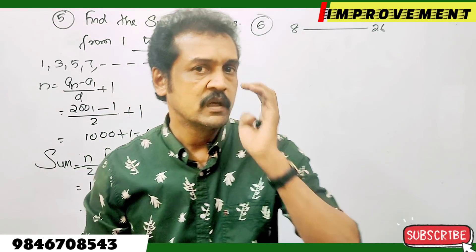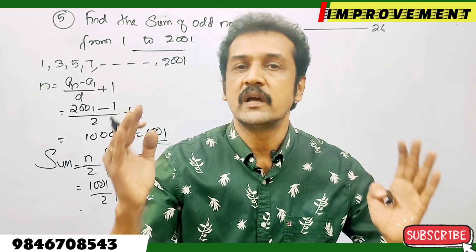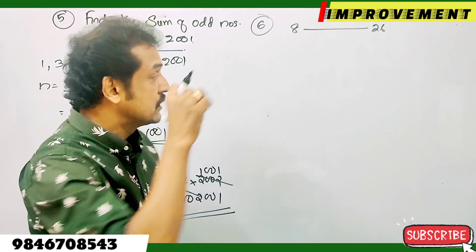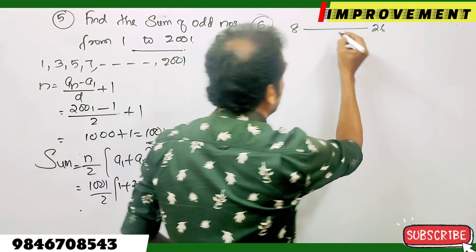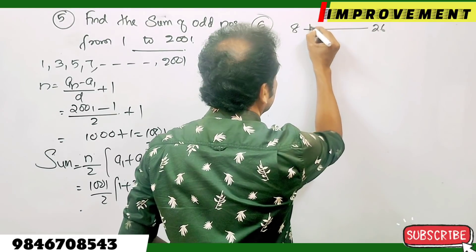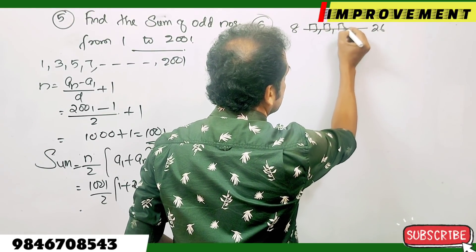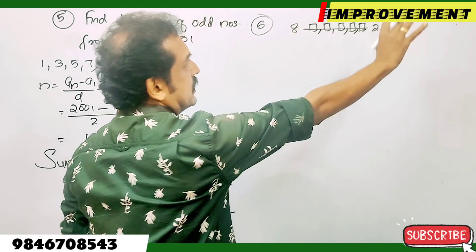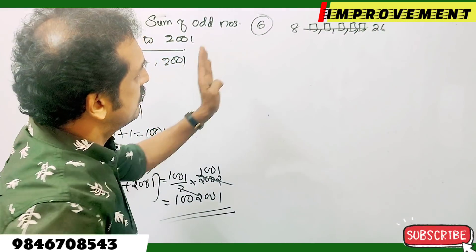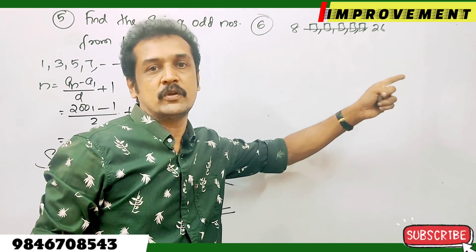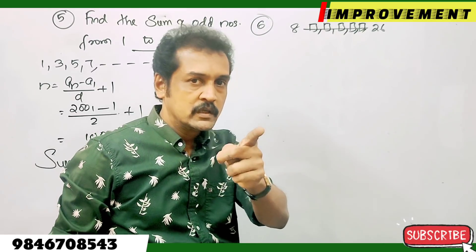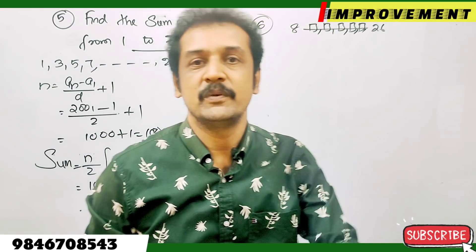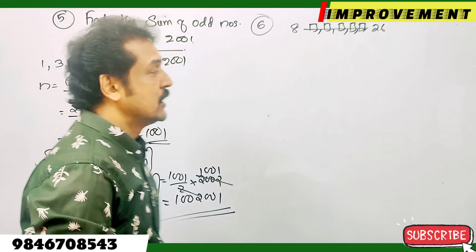Insert 5 numbers between 8 and 26 such that the resulting sequence is in AP. If we insert 5 numbers, we get an AP sequence. That's the same arithmetic sequence with common difference to be found.